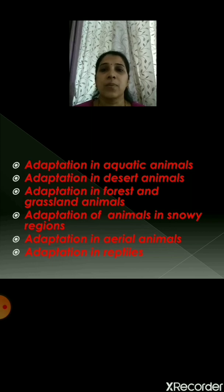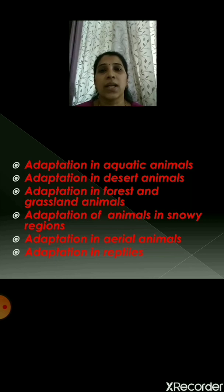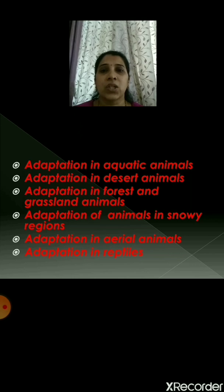In herbivorous animals, the eyes are located below the forehead, and because of this they get a wide-angle vision and can protect themselves from predators. They have long legs and because of this they can take long leaps and run very fast. They also have sharp teeth and because of this they can chew tough plant material.